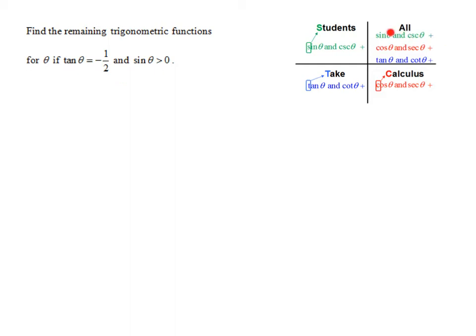Hopefully you remember the mnemonic 'all students take calculus,' which says all trig functions are positive in quadrant one, the sine of theta and its reciprocal are positive in quadrant two, the tangent of theta and its reciprocal are positive in quadrant three, and the cosine of theta and its reciprocal are positive in quadrant four. Since the tangent of theta is negative one-half, the tangent is less than zero. The tangent is positive in quadrants one and three, so it must be negative in quadrants two and four.